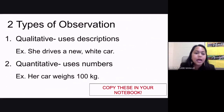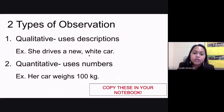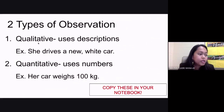Qualitative observation is a type of observation where you only use descriptions — you only use characteristics of objects. For example, you say she drives a new white car. Notice that the words 'new' and 'white' are just descriptions, just adjectives. So we say this is a qualitative form of observation.